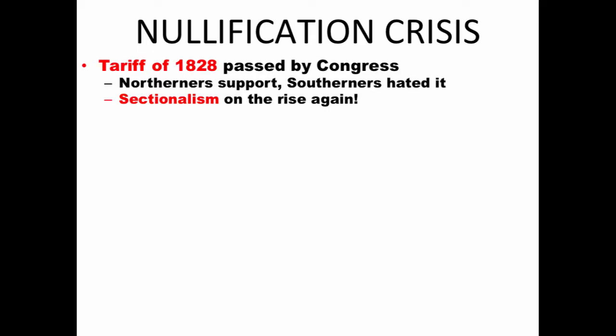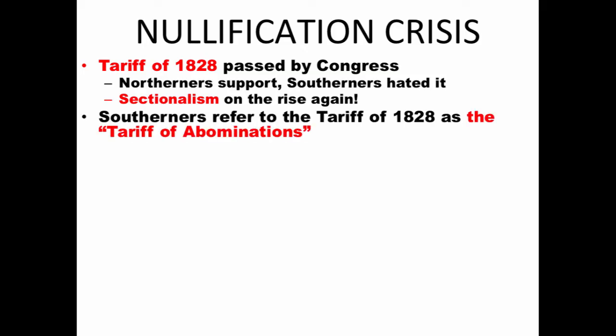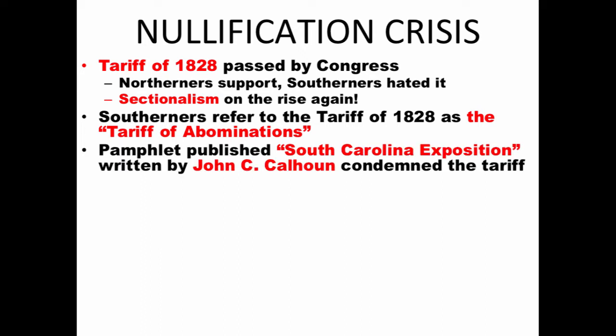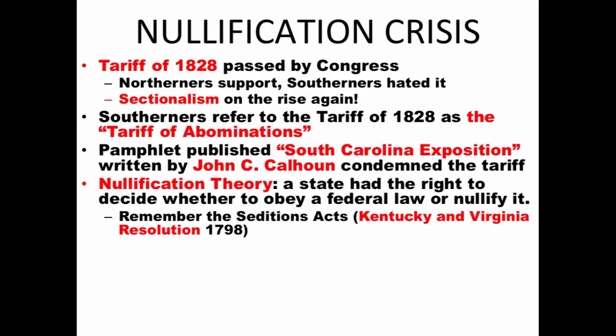Quick rundown: the Tariff of 1828 was passed by Congress. Northerners supported it; Southerners hated it. Southerners referred to it as the Tariff of Abominations. A pamphlet called the South Carolina Exposition and Protest was published — written secretly by Vice President John C. Calhoun — which condemned the tariff. In this document, the idea of nullification was discussed: a state had the right to decide whether to obey a federal law or to nullify it. This idea of nullification had been outlined previously in the Kentucky and Virginia Resolutions in response to the Sedition Acts.